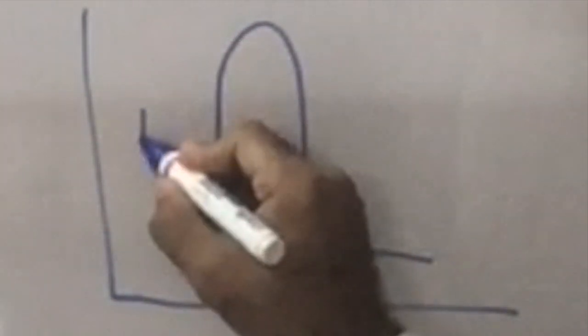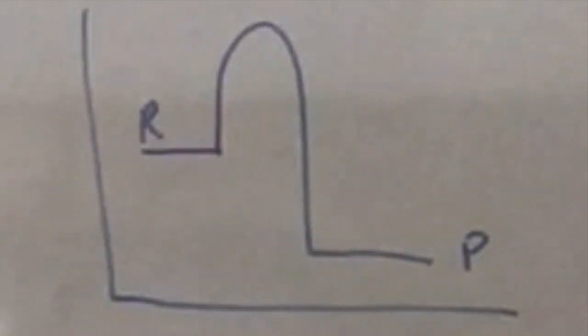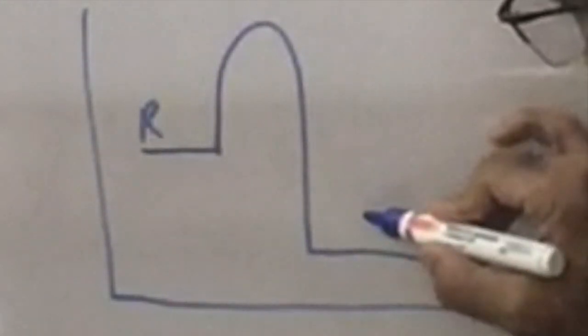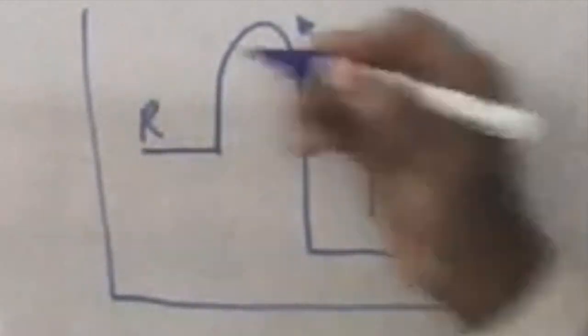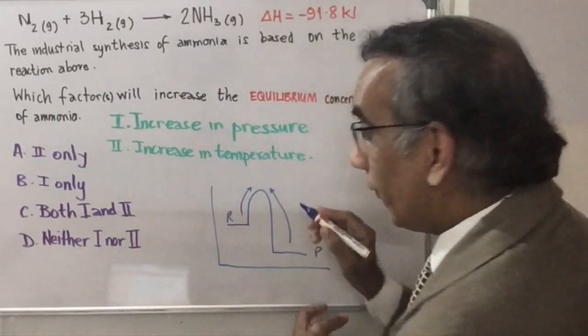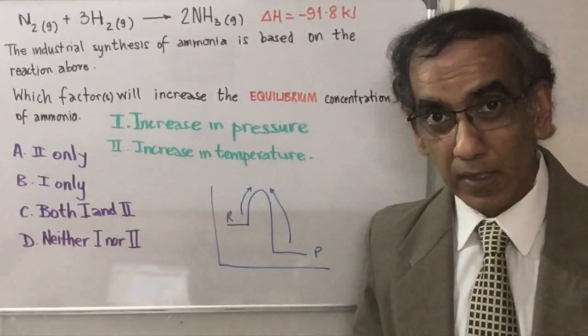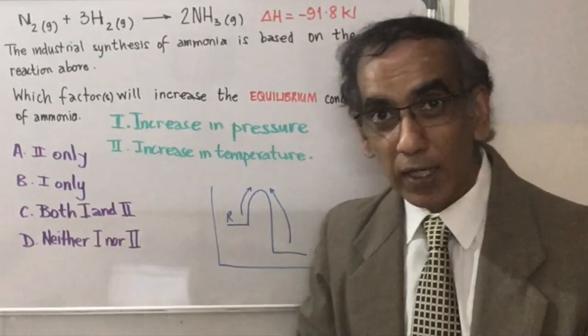When you have an exothermic process, you are considering a reaction profile that looks something like this, with reactants having more energy than products. An increase in temperature is going to favor the reverse direction, products to reactants, because it's got the bigger barrier to cross. So the forward reaction in the Haber process would be favored by lower temperatures.